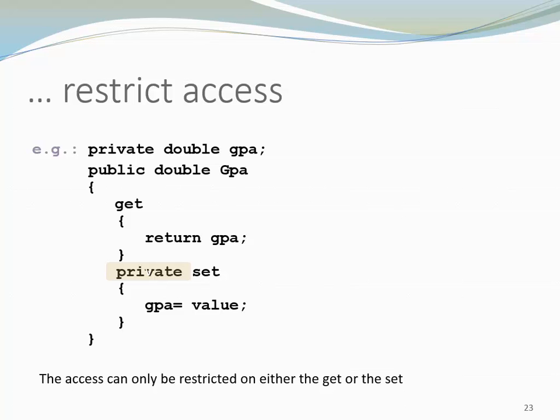You can also restrict the access. So I might have a property which is my GPA, public property. Anybody can read it. However, not everybody is allowed to update and change the GPA. This is something that can be only handled within my class. So the setter is private, the getter is public. I can restrict the access of either set or get, but only one of those two choices, not both.